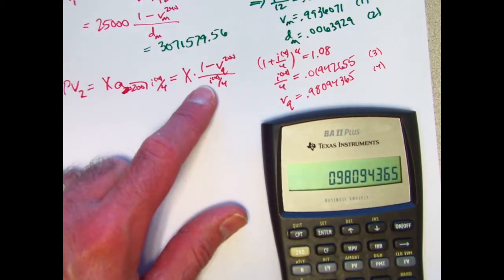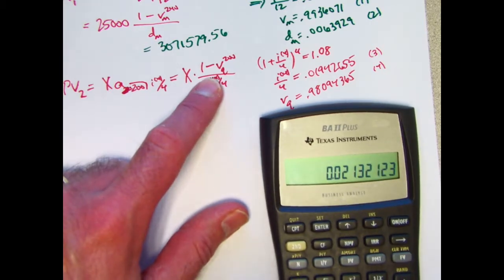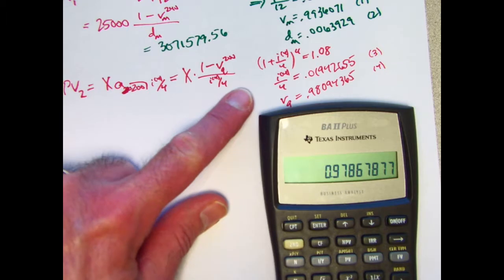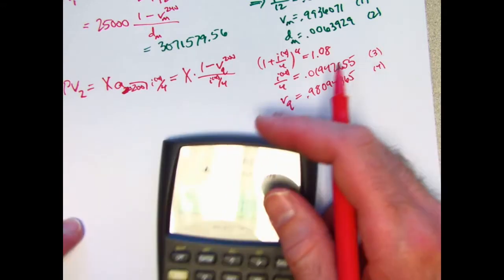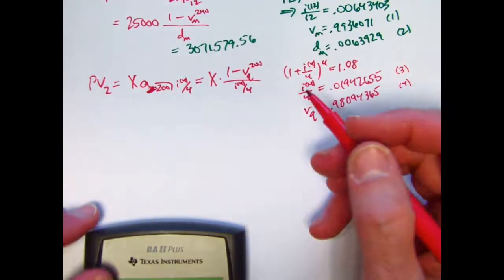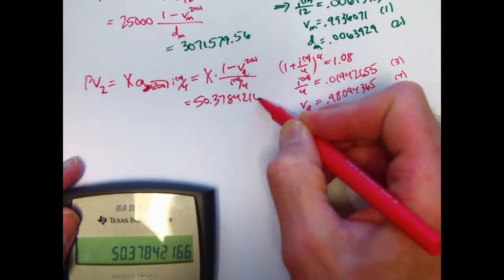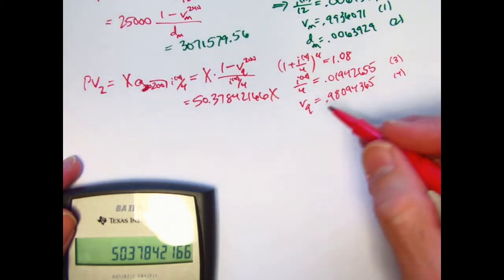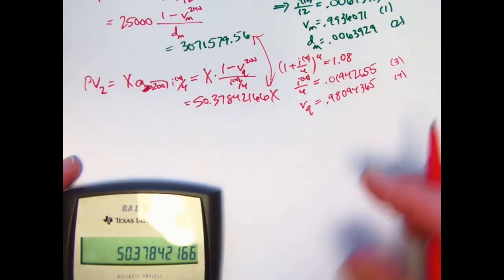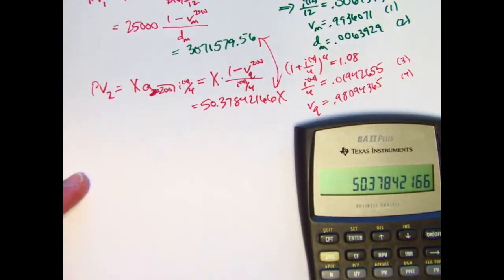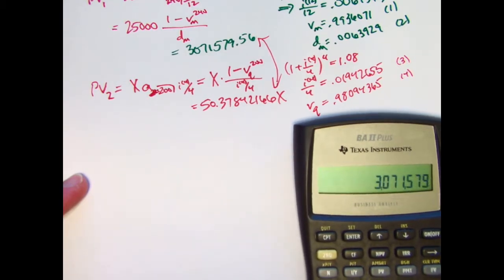I can just right away raise that to the 200th power, but I think I will store it just in case I need it later. I'll store it in register 4. Storing 4. Okay, yeah, now raise it to the 200th power. Subtract that from 1. Divide by I4 over 4, which is in register 3. This factor is about 50.378. We get 50.37842166 times x, and now I can solve for x just dividing, setting these two things equal and dividing by 50.378.